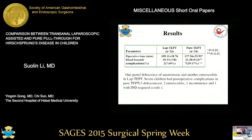In the lap-TAPT group, only one dehiscence of anastomosis and one enterocolitis were observed. In contrast, seven children had multiple postoperative complications in the pure TAPT group, including three dehiscences, two enterocolitis cases, one incontinence, and one who developed intestinal neuronal dysplasia requiring a redo procedure.